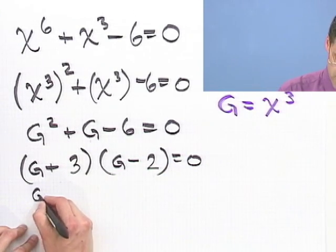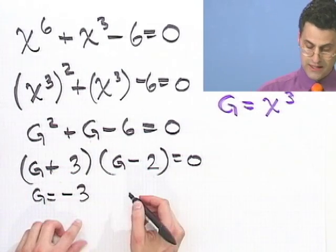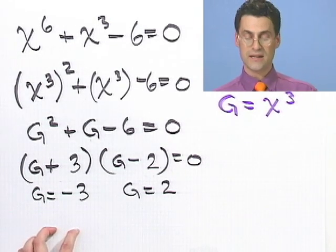And so I see that g equals negative 3. That's what makes that 0. Or this thing is 0, g equals 2. Great.